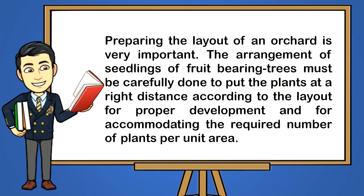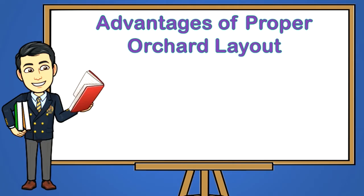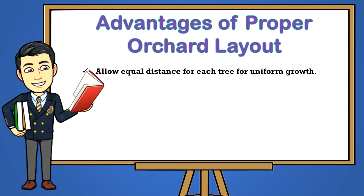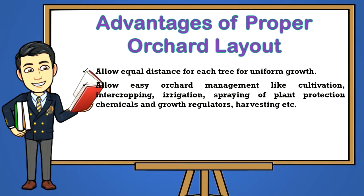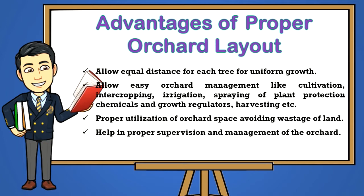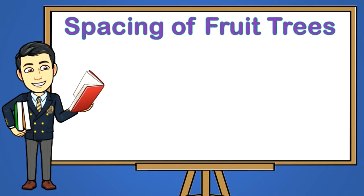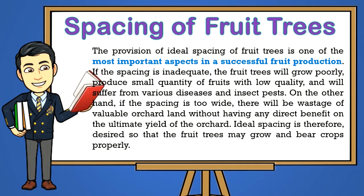Preparing the layout of an orchard is very important. The arrangement of seedlings of fruit-bearing trees must be carefully done to place the plants at the right distance according to the layout, for proper development and for accommodating the required number of plants per unit area. The proper orchard layout has the following advantages: one, allow equal distance for each tree for uniform growth; two, allow easy orchard management like cultivation, intercropping, irrigation, spraying of plant protection chemicals and growth regulators, harvesting, etc.; three, proper utilization of orchard space avoiding wastage of land; four, help and proper supervision and management of the orchard; five, allow further extension of area from time to time as needed.